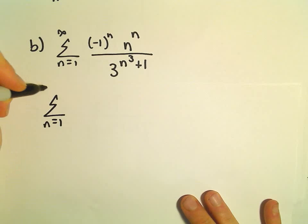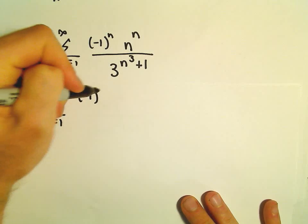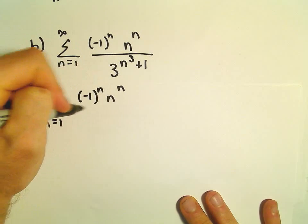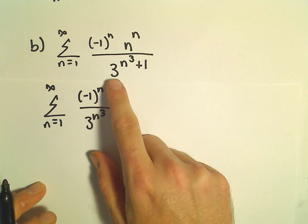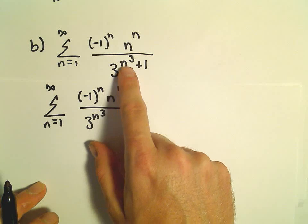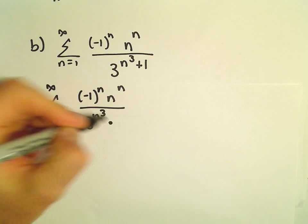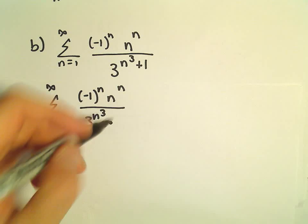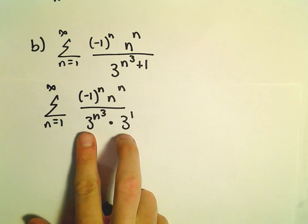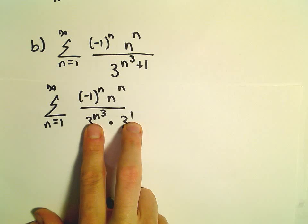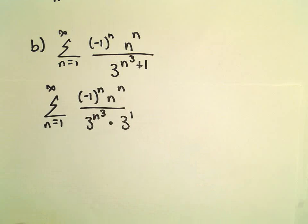The first thing I'm going to do is rewrite this a little bit. We can break up the denominator. Instead of 3 raised to the n to the third plus 1 power, we can write that as 3 raised to n to the third times 3 to the first power. Again, if we have like bases, we would add the exponents. So we would certainly get all of this stuff right back.